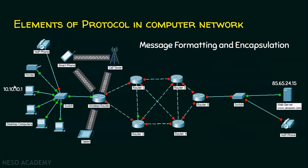Don't worry about IP addresses now — we have a separate lecture on IP address. For the time being, think of it like this: every human is identified by their name, and likewise every device in the network is identified by its IP address. When a computer wants to send some data, it encapsulates the source IP address and the destination IP address with the data. This allows any intermediary device to know where the data is coming from and what the destination is, enabling it to forward the data correctly. This is message formatting and encapsulation.